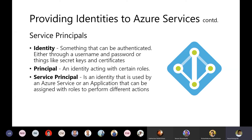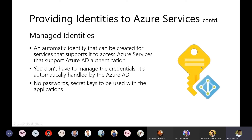A service principal is an identity used by an application or service, assigned with roles to perform specific actions — such as reading secrets from Azure Key Vault or allowing a CI/CD environment like Azure DevOps to deploy applications to Azure. Service principals require a secret, certificate, or connection string to authenticate, which becomes an additional management responsibility.